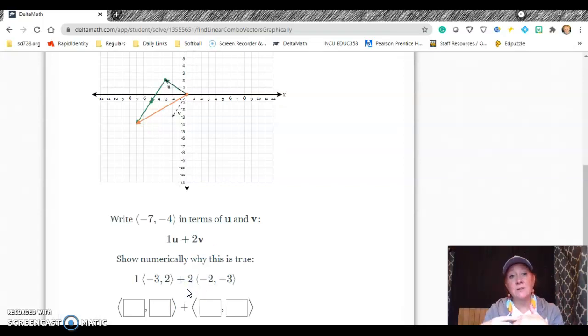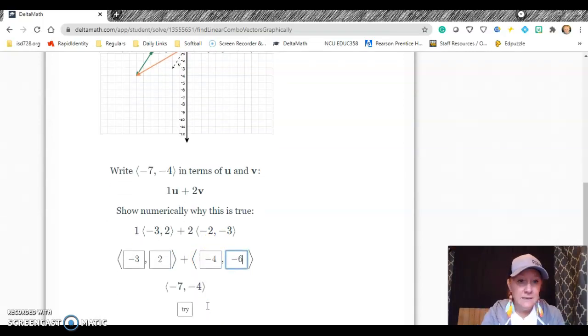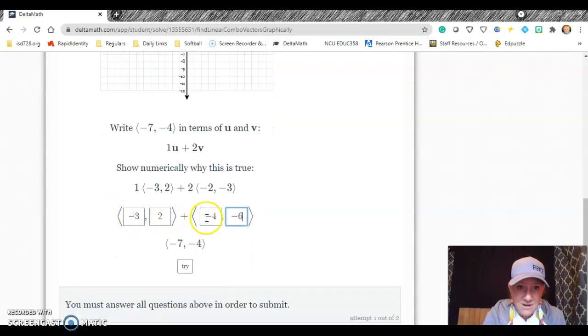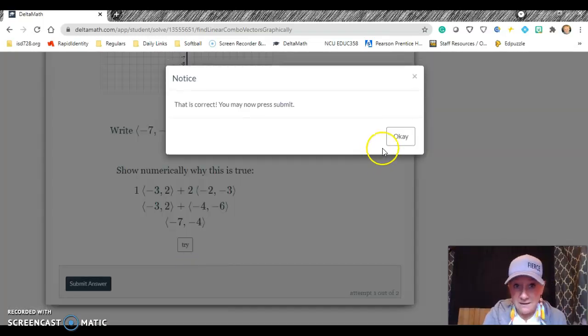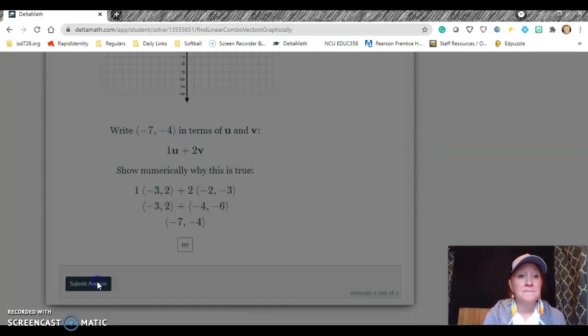So then it just kind of goes through, show numerically why this is true, which is really good learning. Like, why does this work? Well, because then you have negative three, two, because there's just one of those and then two, that would make this one be negative four, negative six. And if I put those together, I get negative seven, negative four. Yeah. Okay. So now I can submit. Alright.